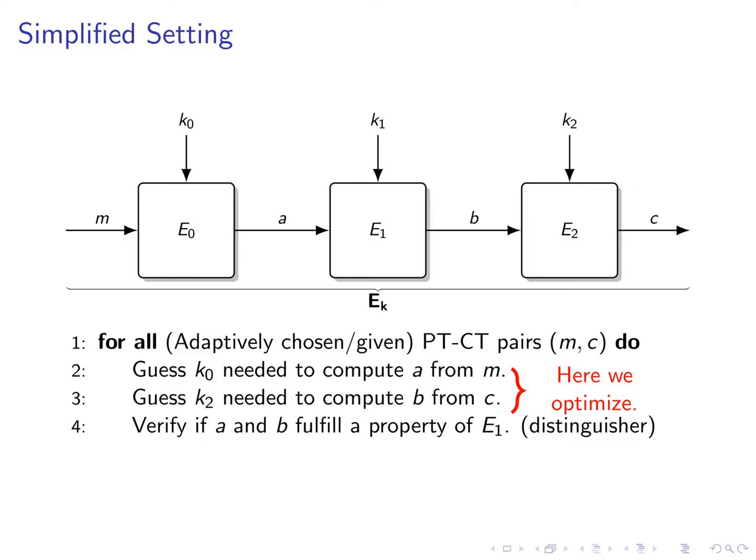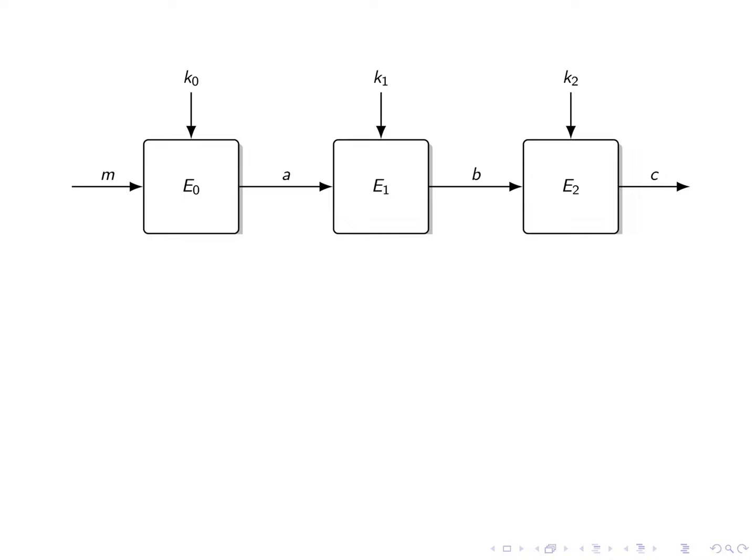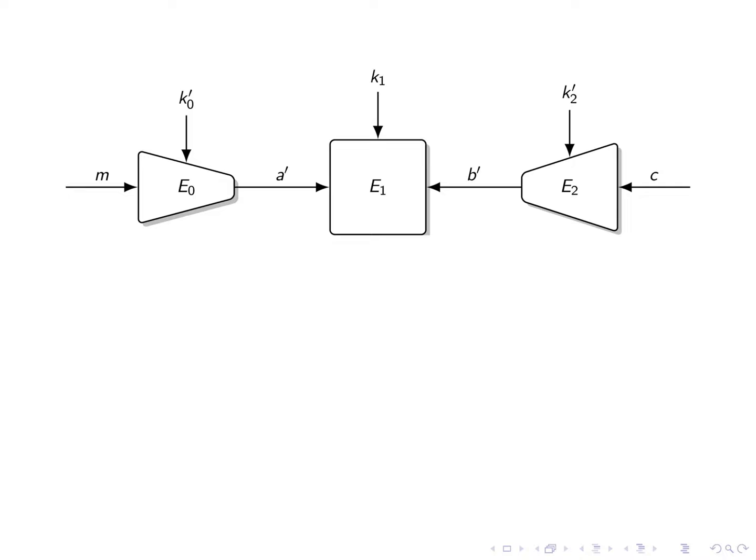The first thing to note is that usually we don't have to supply the full states A and B to the distinguisher. Instead it is usually sufficient to supply smaller parts of those states to the distinguisher. Our first observation is that these smaller states usually do not depend on all of K0 and K2. Thus we can guess less key material.